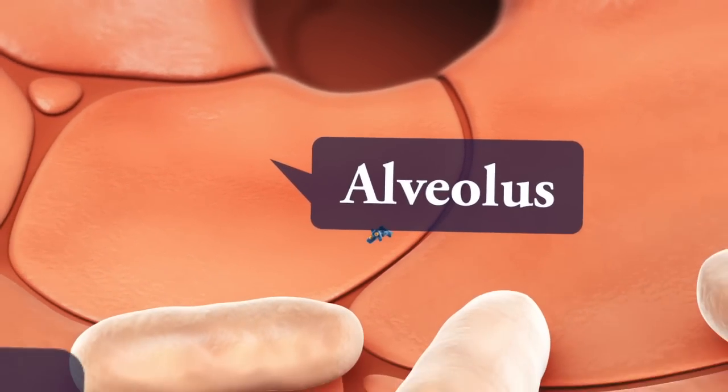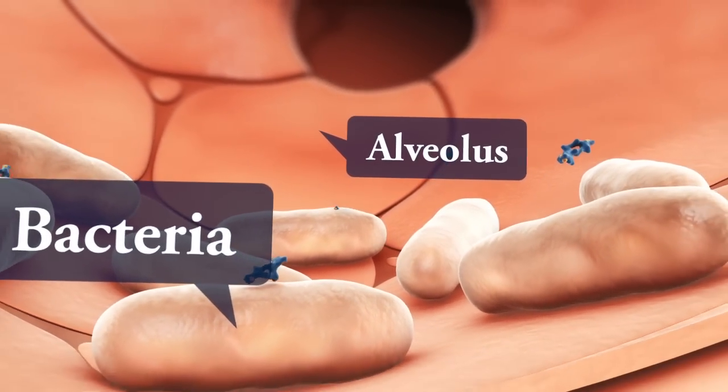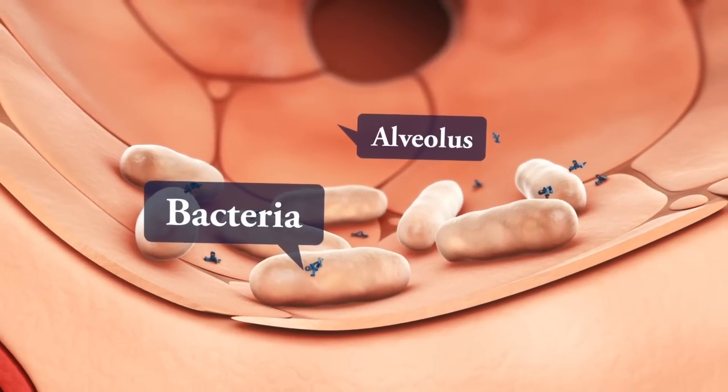Tildipirosin can easily overcome the barriers in the lungs and blood vessels of cattle to rapidly reach the site of infection in the respiratory tract.